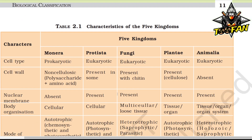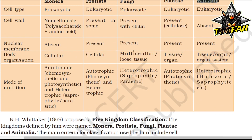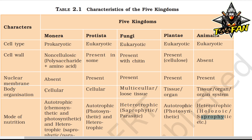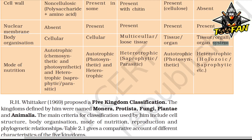In the Five Kingdom Classification system, cell types are: Monera (prokaryotic), and Protista, Fungi, Plantae, and Animalia (all eukaryotic). Mode of nutrition includes autotrophic, heterotrophic, holozoic, and saprophytic, etc. Level of organization ranges from cellular, to multicellular with tissue, organ, or organ system levels.